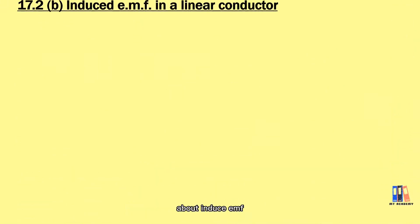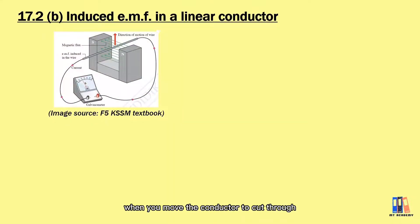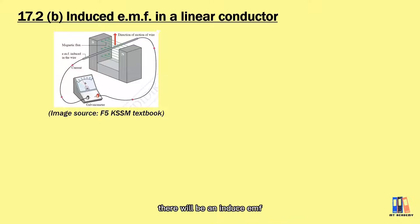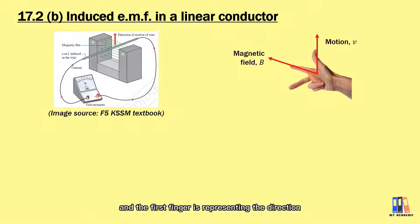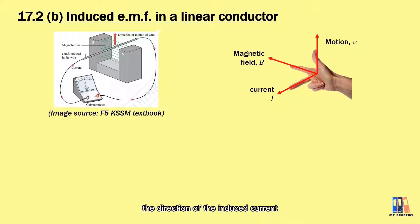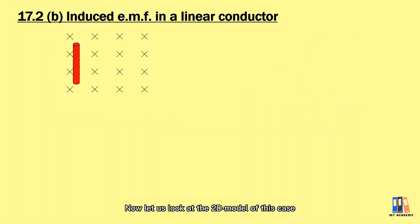Now we're going to talk about the first case: the induced EMF in linear conductors. In SPM physics, you learned that when we move conductors to cut through the magnetic flux produced by a permanent magnet, there will be an induced EMF and induced current flowing in the conductors. In this chapter, we will apply the Fleming right-hand rule. The thumb refers to the motion of the conductor, the first finger represents the direction of the magnetic field, and the second finger represents the direction of the induced current. You can also obtain the direction of the induced EMF by the cross product of velocity and magnetic flux density.